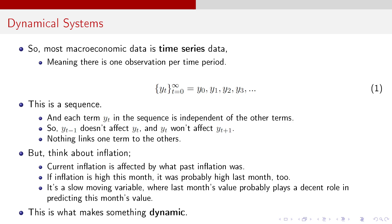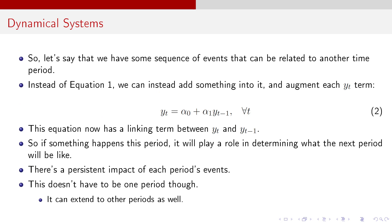But think about something just like inflation. Current inflation is affected by what past inflation was. It's a relatively slow-moving variable. So if inflation was high this month, it's probably going to be able to stand to reason it was high last month too. It's probably going to be high next month. It's pretty slow-moving. So the value that it takes now is likely going to be determining the value that it's going to take in the very near future. This is what makes something dynamic. And it's actually very useful in macroeconomics because it gives us these inter-temporal time linkages between some of these variables.